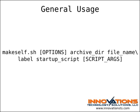Here's the general usage syntax for makeself.sh. After the options, you need to supply the path and name of the directory that you want to include in the archive. The next argument is the file name of the self-extracting archive that will be created. You can choose any name you want, but for consistency and clarity it's recommended that the file have a .run or .sh file name extension. Next, you can specify a label that will act as a short description of the archive and will be displayed during extraction. The final argument is the name of the script you want run after extraction is complete.